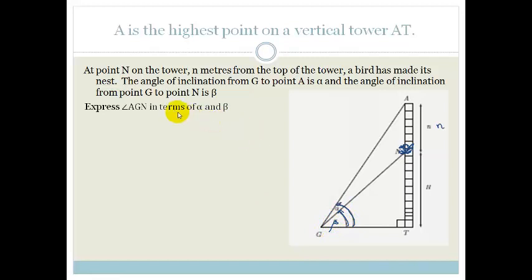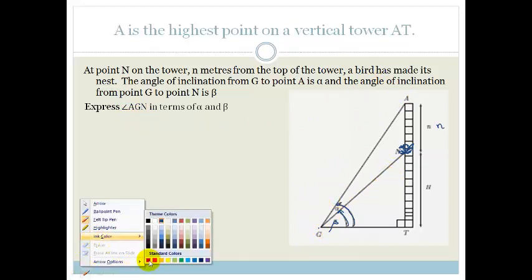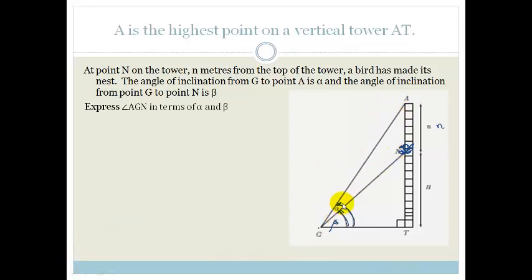The first thing they say is express angle AGN. So we want angle A, G, N. They want this angle in terms of alpha and beta.